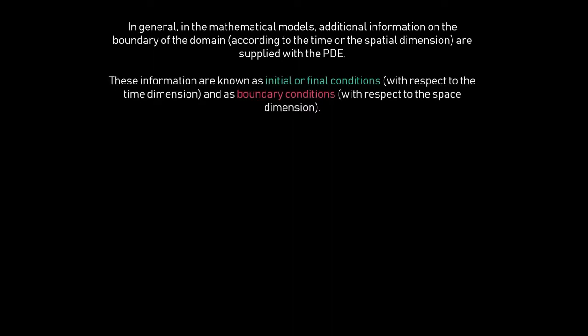These pieces of information are known as initial conditions or boundary conditions. If you are considering time as an independent variable, they are called initial conditions. If you are considering spatial dimensions as the independent variables, they are called boundary conditions. In this series we are not going to discuss time-variant problems where time is an independent variable, because our problems will mostly be static or equilibrium problems.